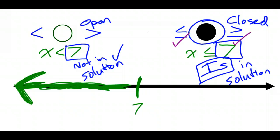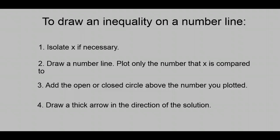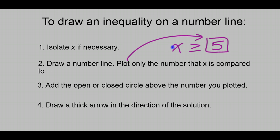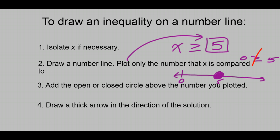To draw an inequality on a number line, follow these steps: First, isolate x so that all you have is x compared to one number using less than, greater than, less than or equal to, or greater than or equal to. Second, draw a number line and plot only that one number. Third, add an open or closed circle — open for strict inequalities, closed for or-equal-to inequalities. Fourth, draw a thick arrow in the direction of the solution, checking with 0 to confirm which side is correct.